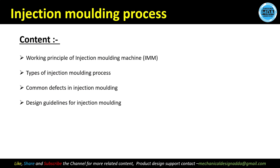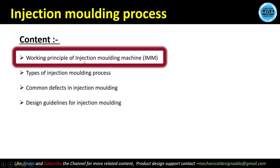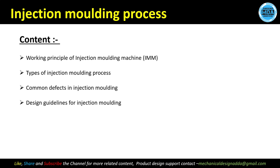For injection molding, the important things we need to cover are: the working principle of the injection molding machine, types of injection molding machines, common defects in the injection molding process, and design guidelines for designing parts for injection molding. There are other points we will also cover. Now we will understand the working principle, and going forward we will cover the other related topics.